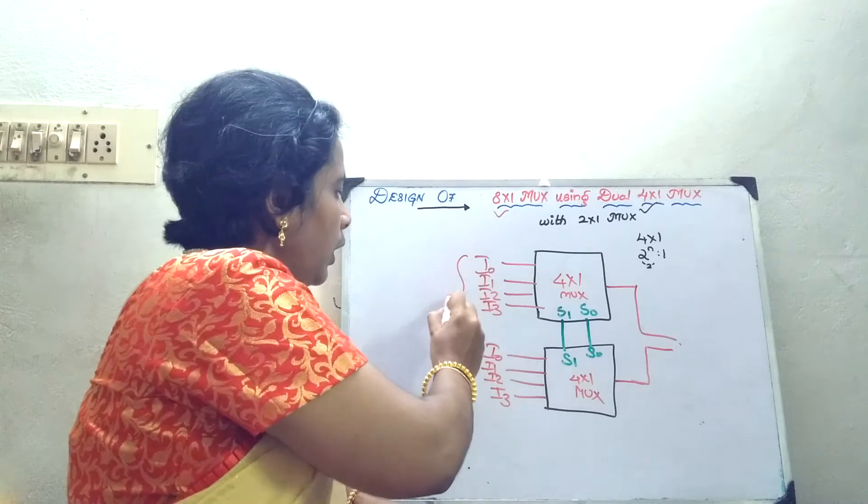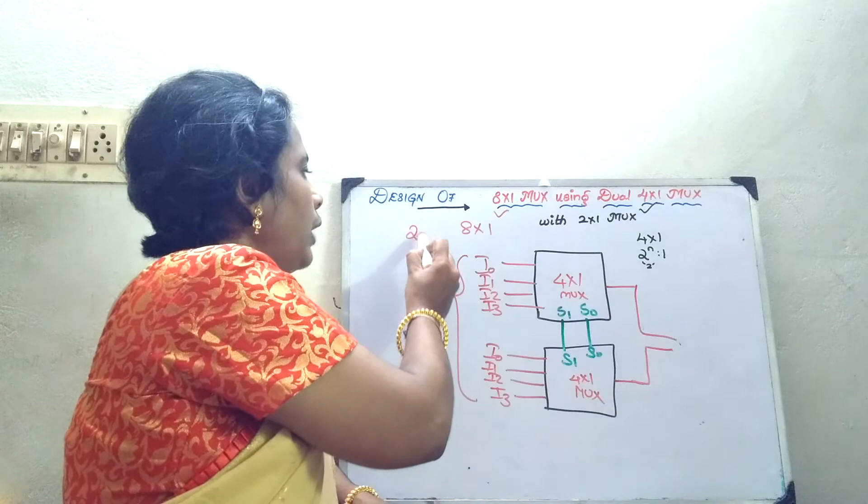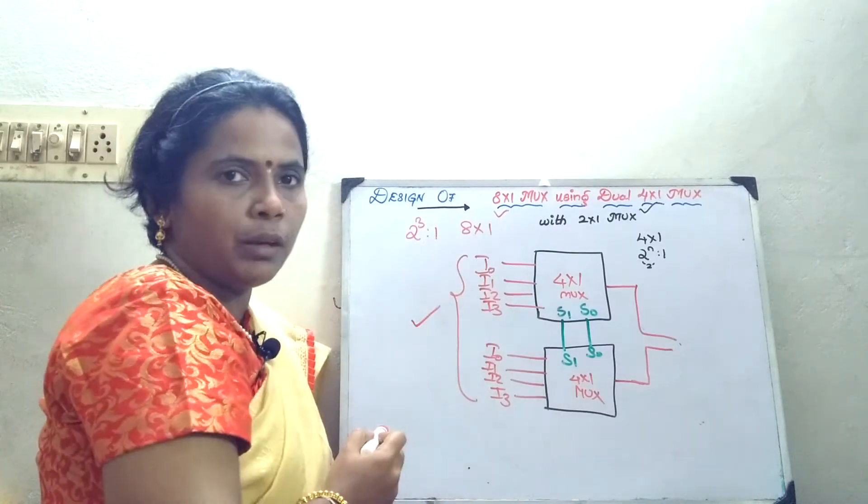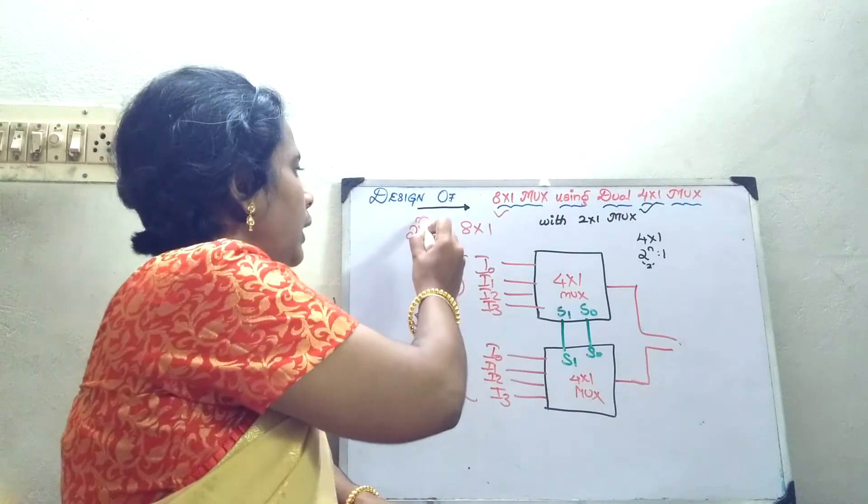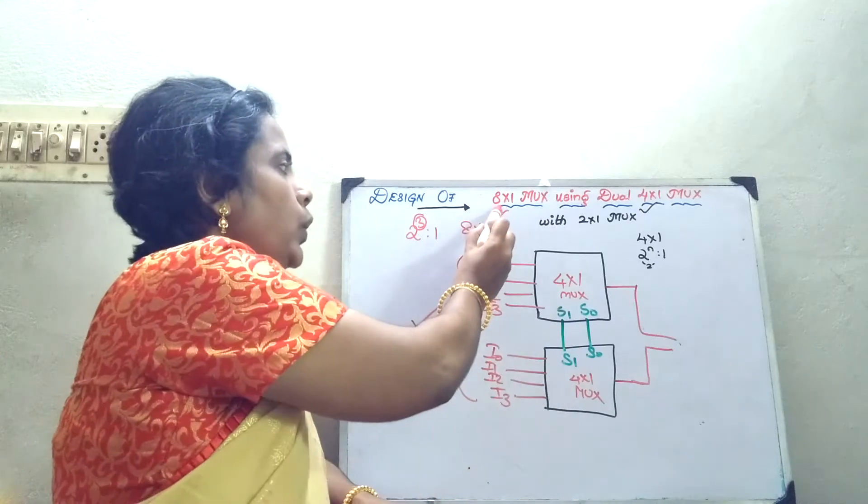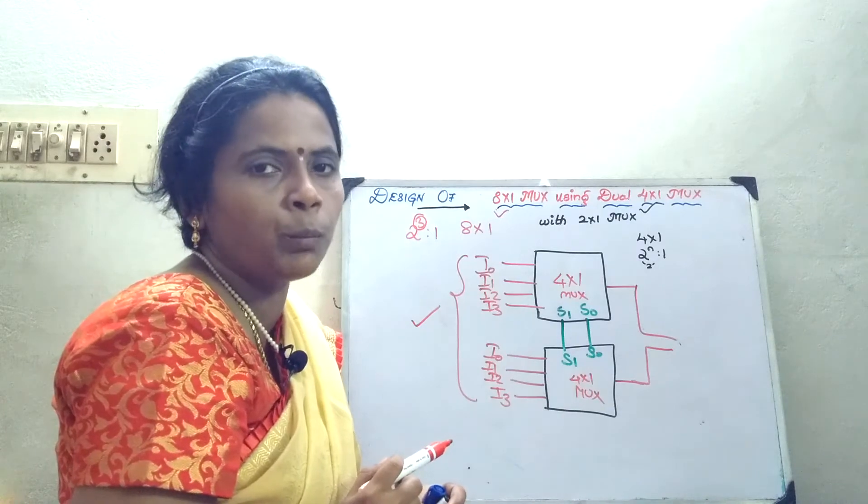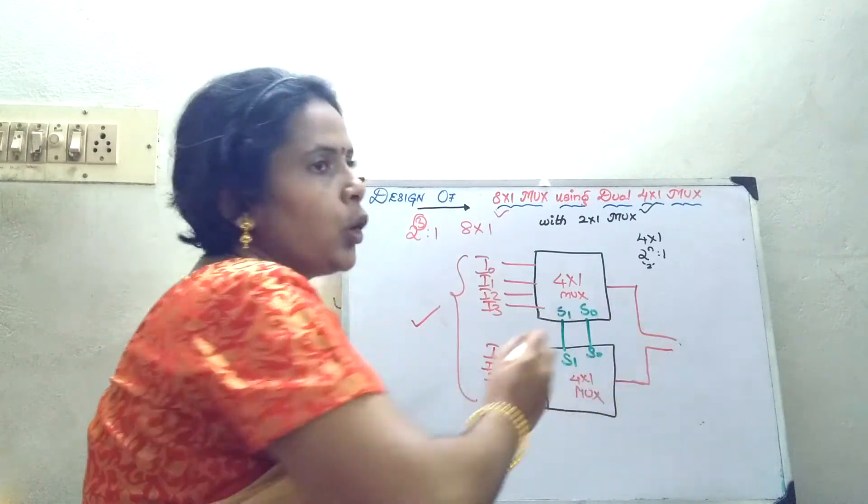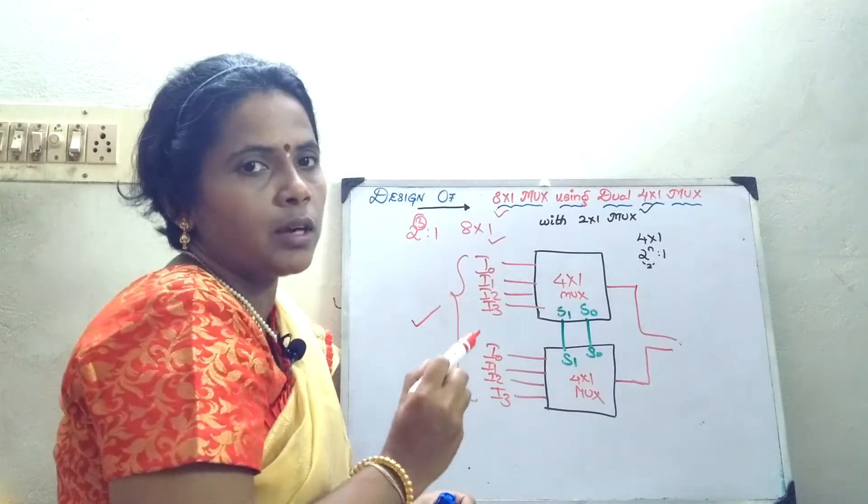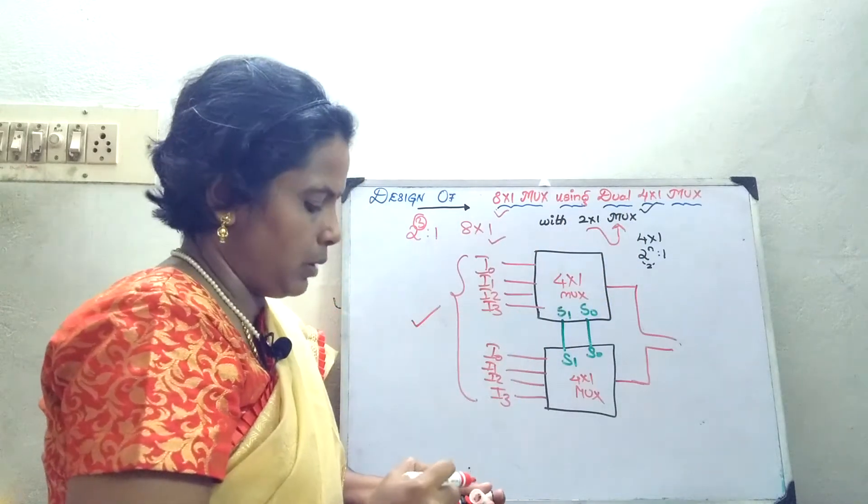Here in this case, 8 cross 1 should have 2 power 3 is to 1. Number of inputs is 8, verified. But number of select lines is not considered. Now only 2 select lines are there. But when I want to design an 8 cross 1 mux, I need 3 select lines. So that concept should be born in mind. And here I have 2 outputs, but you should have only 1 output. So this concept should be integrated using your 2 cross 1 mux.